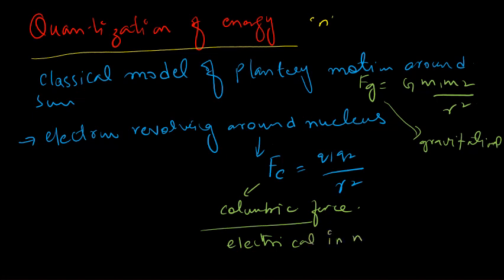The force between the nucleus and the electron is Coulombic in nature because charges are involved. The electron is negatively charged, and the nucleus contains protons, which are positively charged particles, and neutrons, which are neutral. So the interaction between the nucleus and the revolving electron is Coulombic.